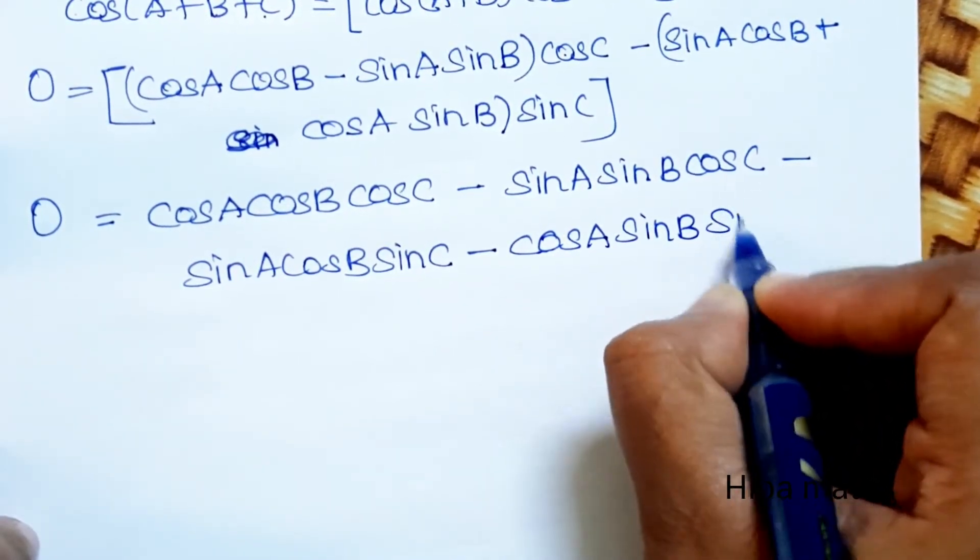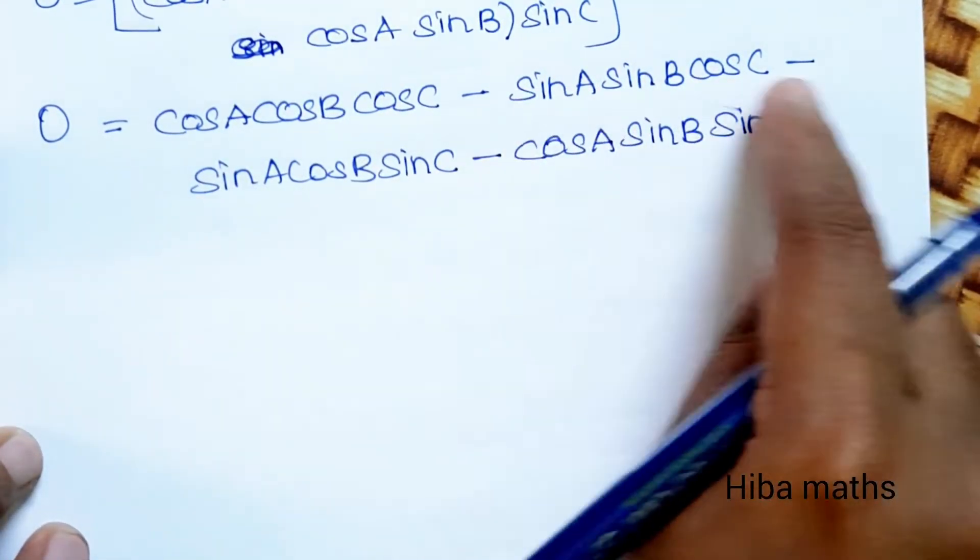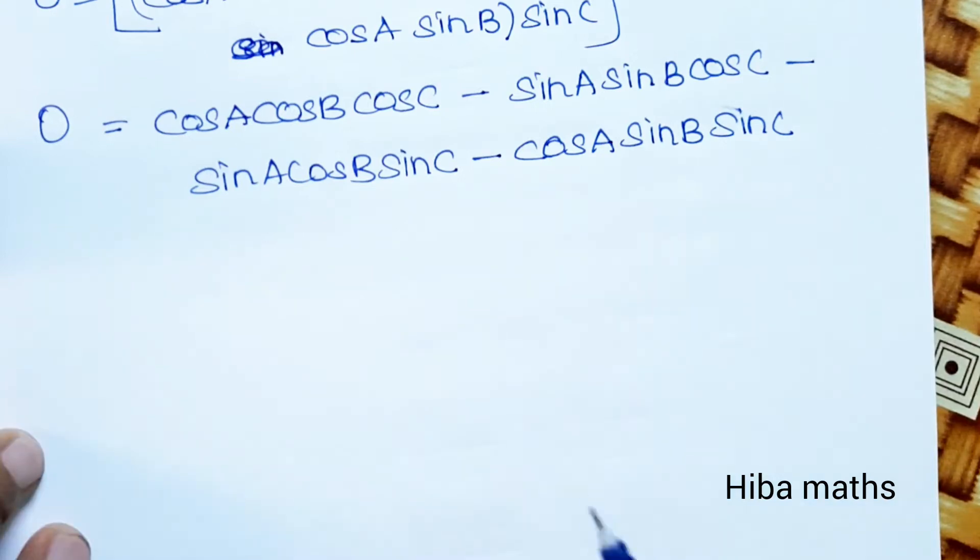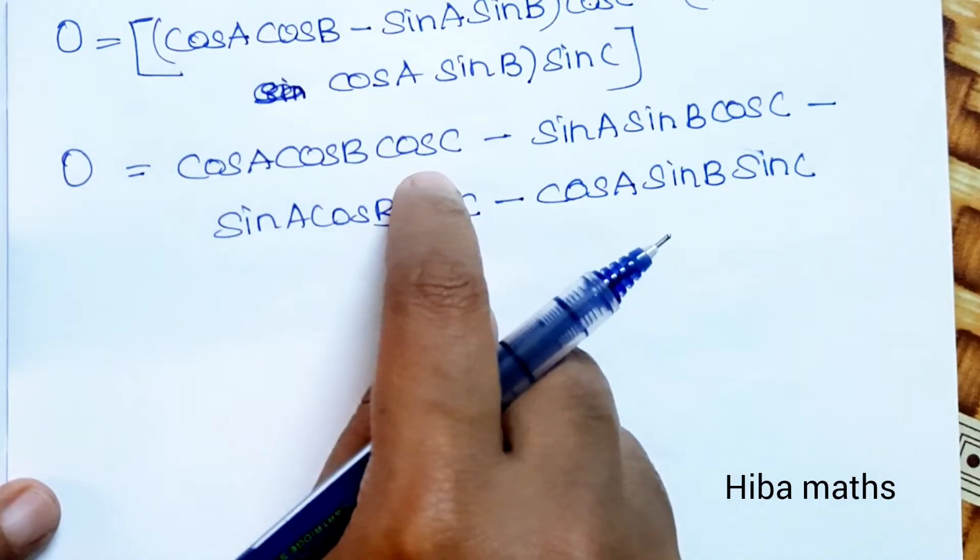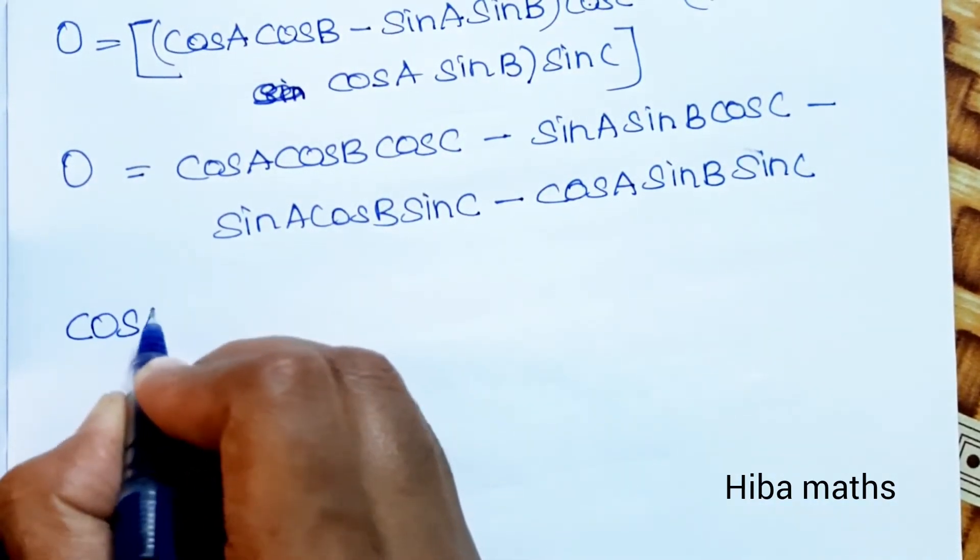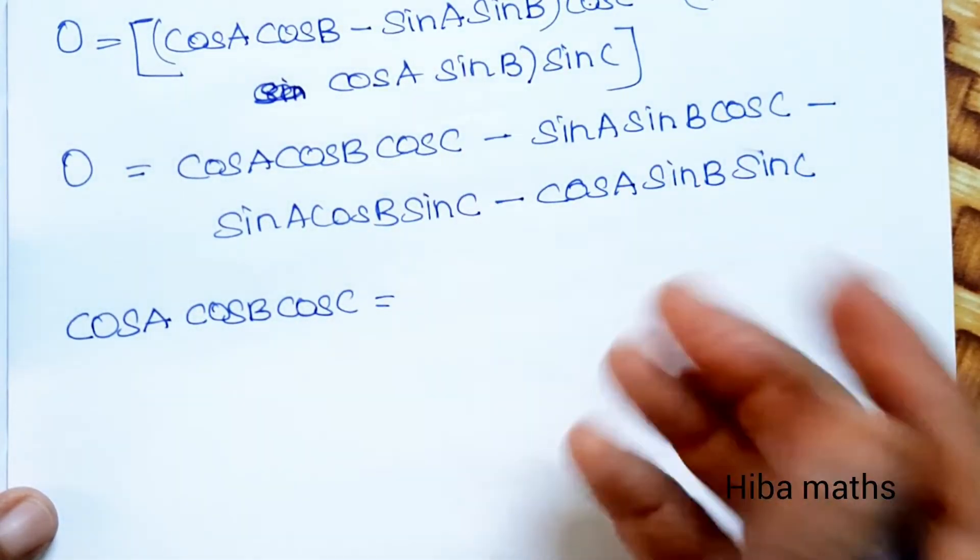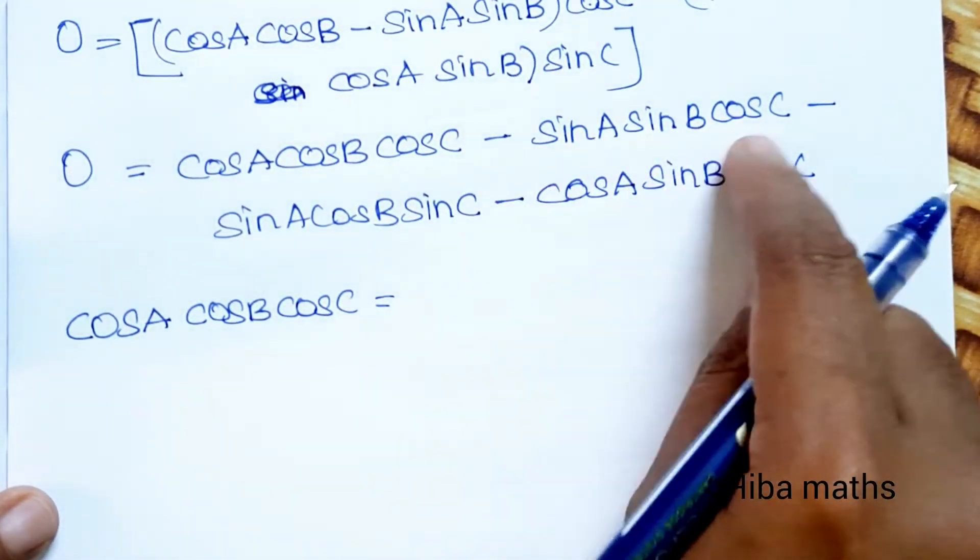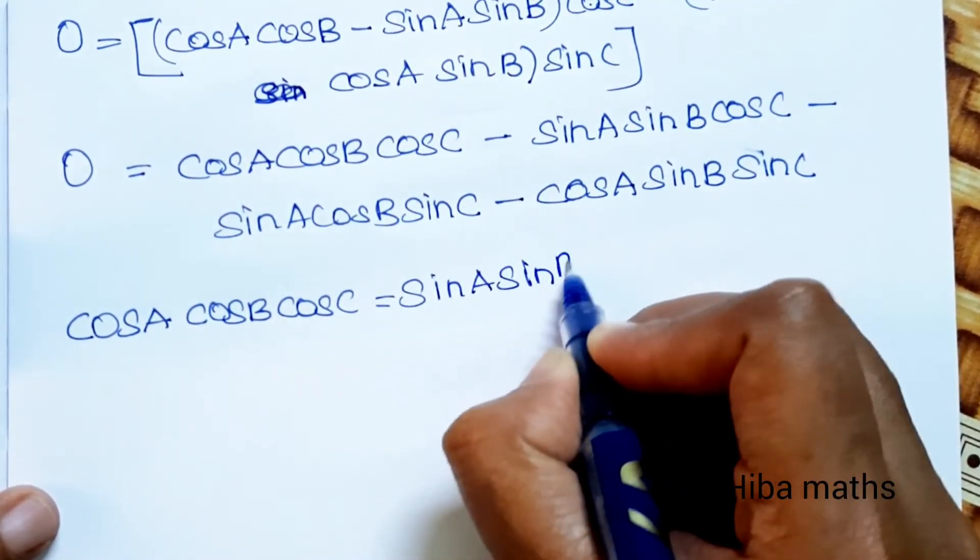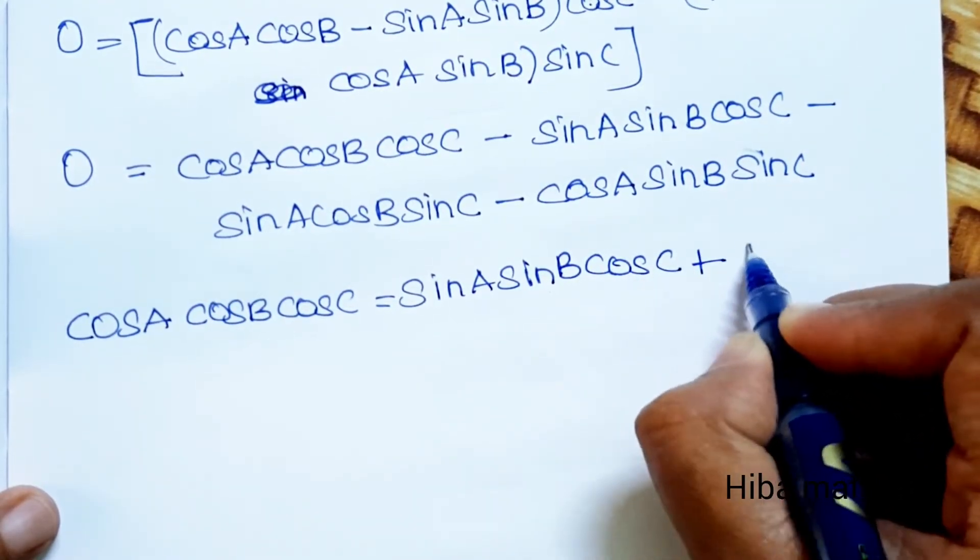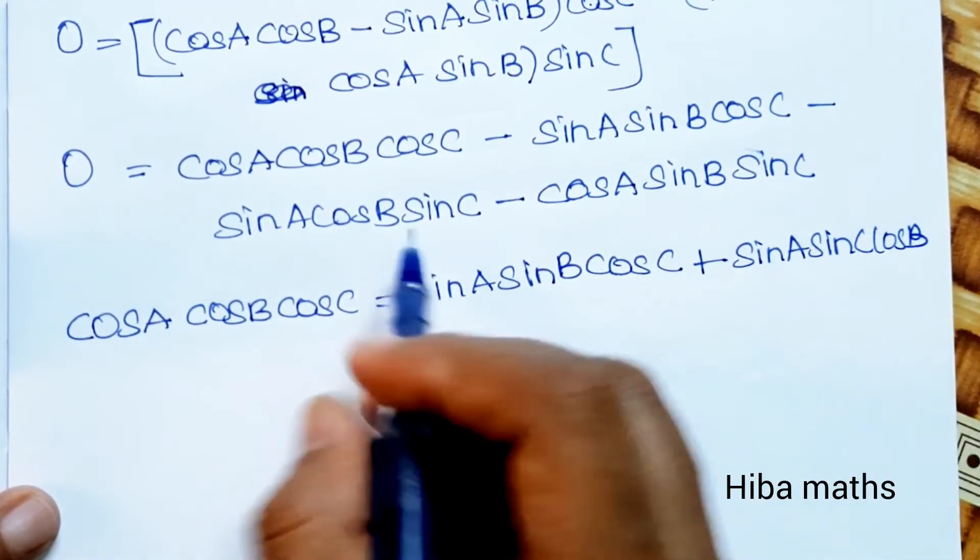This full term equals 0. This minus value I will take to the other side. This full term I will take to the other side. This side only cos A cos B cos C remains. Cos A cos B cos C, balance other side, minus plus becomes sin A sin B cos C plus sin A sin C cos B plus.